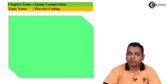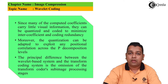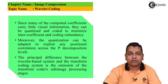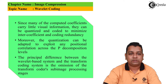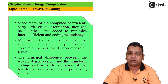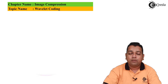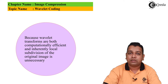Since many of the computed coefficients carry little visual information, they can be quantized and coded to minimize inter-coefficient and coding redundancy. Moreover, the quantization can be adapted to exploit any positional correlation across the p decomposition levels. The principal difference between the Wavelet-based system and the transform coding system is the omission of the transform coder's sub-image processing stages. Because Wavelet transforms are both computationally efficient and inherently local, subdivision of the original image is unnecessary.